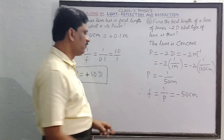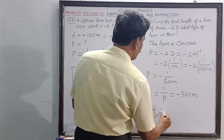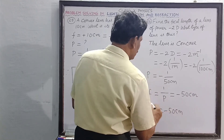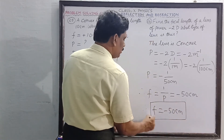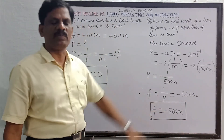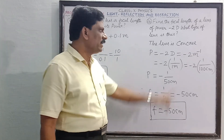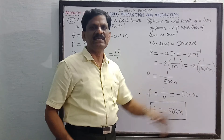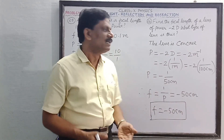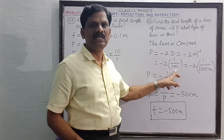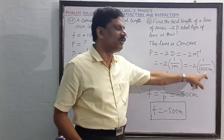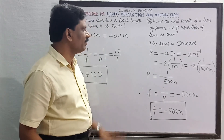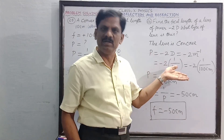The focal length f equals minus 50 centimeter. Do not solve such problems in a hurried manner. Write that 1 diopter equals meter power minus 1, which is the reciprocal of 1 meter, and 1 meter can be converted into 100 centimeters. Similarly, two more problems will be solved next.